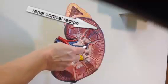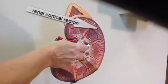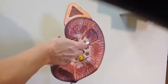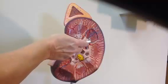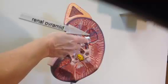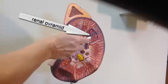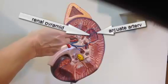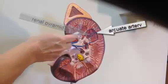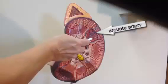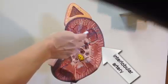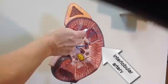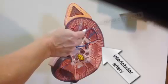So we have the interlobar artery going beside the renal pyramids, and on top we have the arcuate arteries. From the arcuate arteries we have interlobular arteries reaching all the way up to the renal corpuscles.